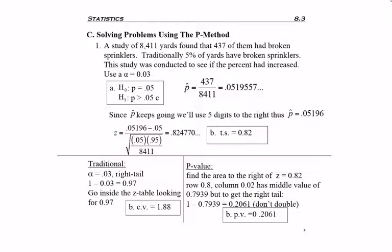And since traditionally 5% have broken sprinklers, I rewrote that as the decimal number 0.05, since I'm going to be using it in a formula later, and increased is my claim, so H₁ is my claim.